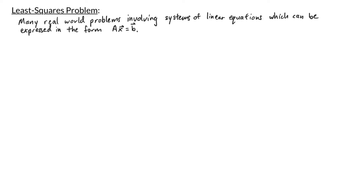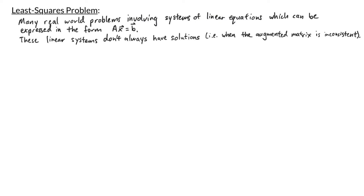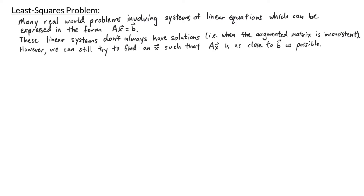In this video, we are going to be talking about the least squares problem. It turns out that many real-world problems involve solving systems of linear equations, and we can write those systems in the form A times x equals B for some matrix A. These linear systems don't always have solutions. However, we can still try to find an x such that A times x is as close to B as possible.